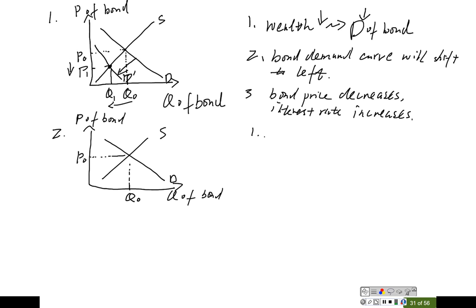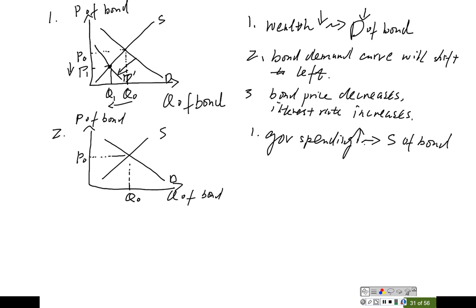Question number two: government spending increases — the government spends billions of dollars on the bailout. You have to be familiar with the factors of the supply of the bond and demand of the bond. You can find out that government spending is related to the supply of the bond. If the government spends billions of dollars, their tax income probably won't be enough to cover the spending. So the government has to borrow money by going to the financial market to issue bonds, which means the supply of the bond will go up.